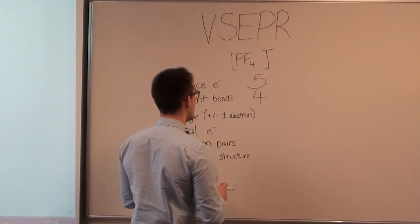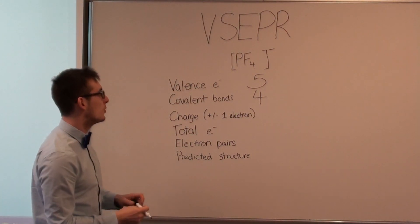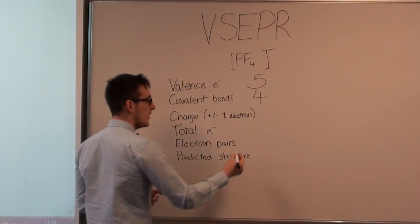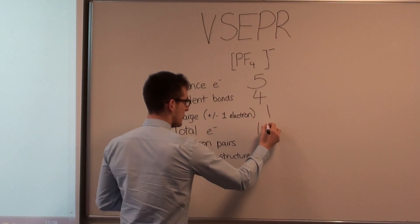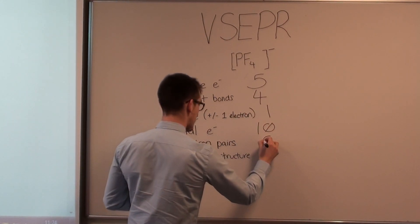And for this example, it's got a negative charge, so we add one electron to the total. That gives us a total of ten electrons and five pairs.